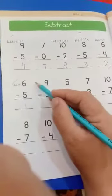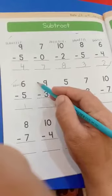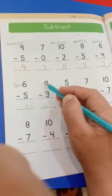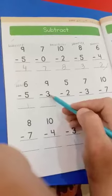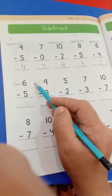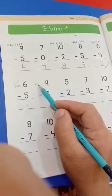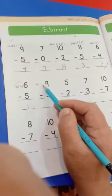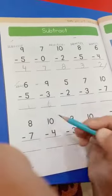Same like this, draw 9 lines: 1, 2, 3, 4, 5, 6, 7, 8, 9. And 9 minus 3. We minus 3: 1, 2, 3. Now count the lines left: 1, 2, 3, 4, 5, 6. So write down answer 6. 6 is our answer.